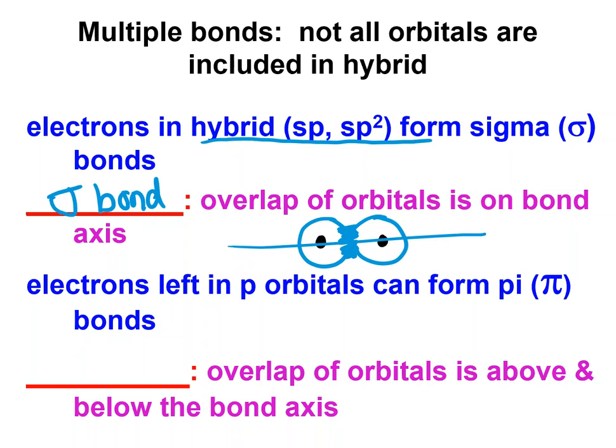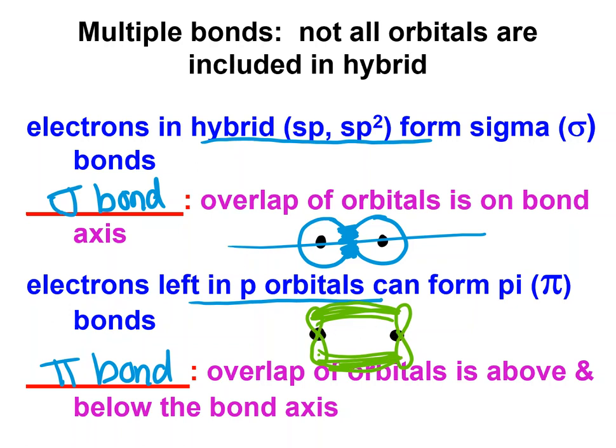The other possibility is a pi bond, and this is from p orbitals. You need to keep track that pi is from p, sigma are from the hybrid. Pi bonds have the overlap above and below the axis. This happens when you have p orbitals, and when these two get closer together, these orbitals kind of spread out to where they're connecting. They don't connect right between, they connect above and below.